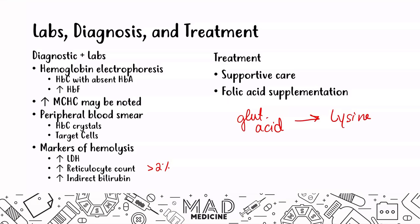You will also see target cells, and treatment is mainly supportive care. What you really need to know about this disease is that it mainly occurs in locations where malaria is also present, and this may have protective properties against malaria. Remember, this is a cause of hemolytic normocytic anemia where the MCV is going to be normal.